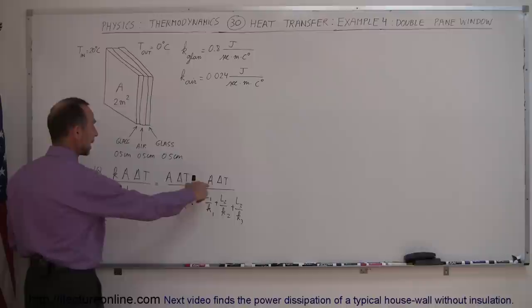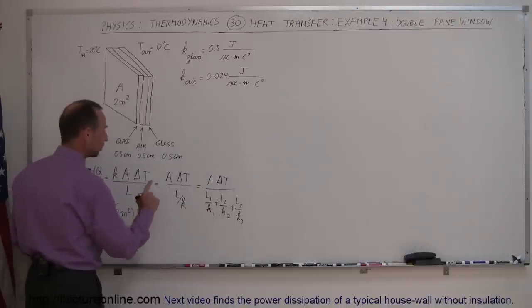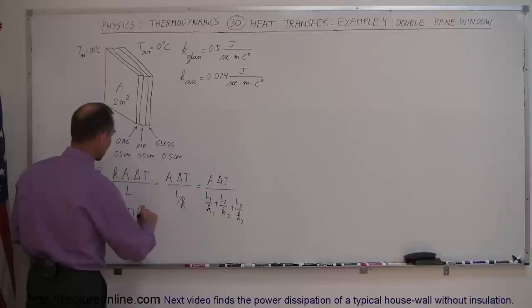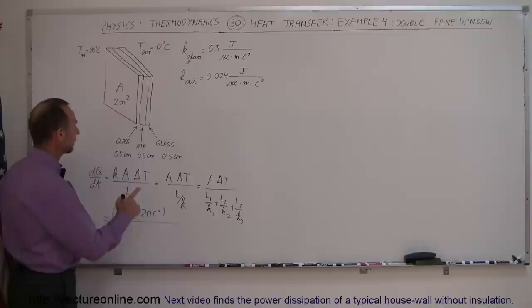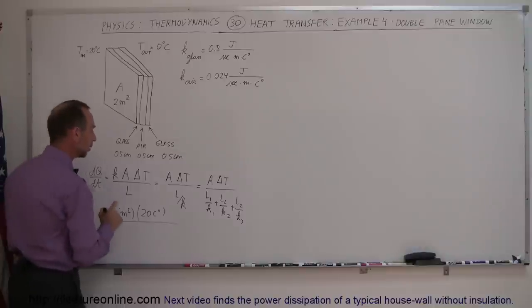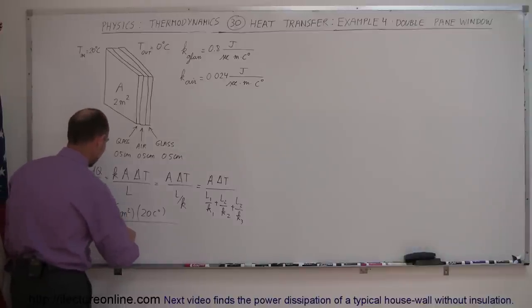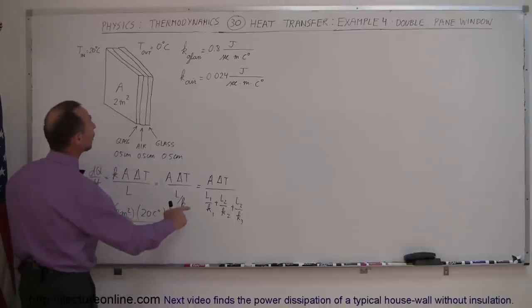This is equal to the area, which is 2 meters squared, times the difference in the temperature, which would be 20 centigrade degrees, divided by the L over k for each layer. Notice that each layer is a half a centimeter thick, so the L1 is 0.005 meters.